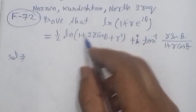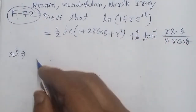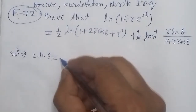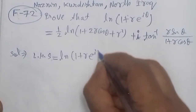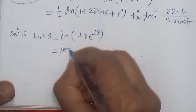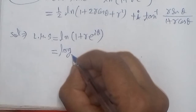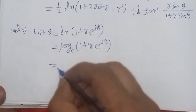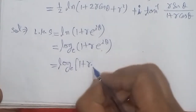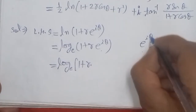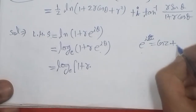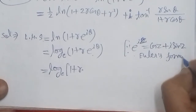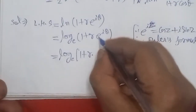This is the real quantity we have to prove. So I write the left hand side and on solving we get the right hand side. We start with the left hand side which is equal to the natural logarithm of (1 + re^(iθ)). Natural logarithm means the log whose base is e. We know that by Euler's formula, e^(iz) = cos(z) + i·sin(z).